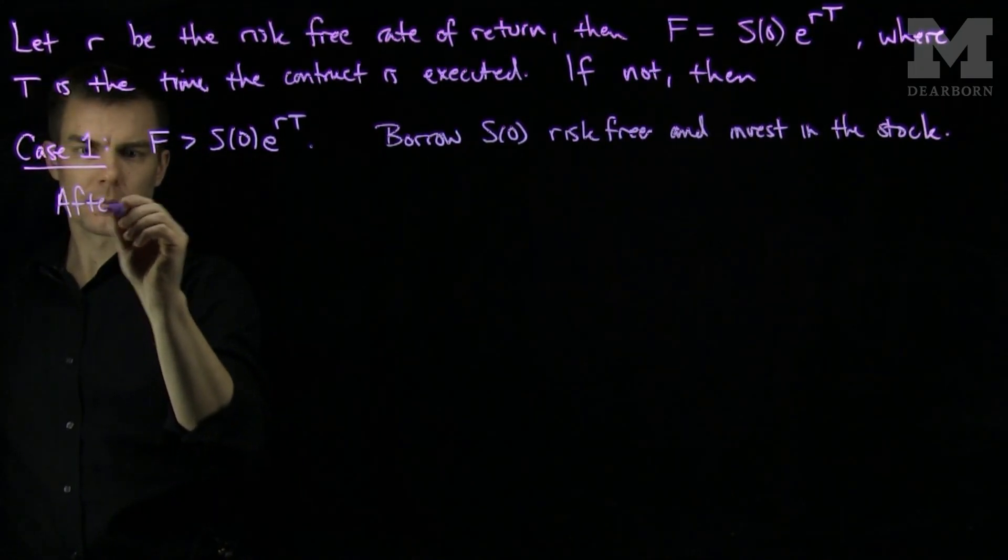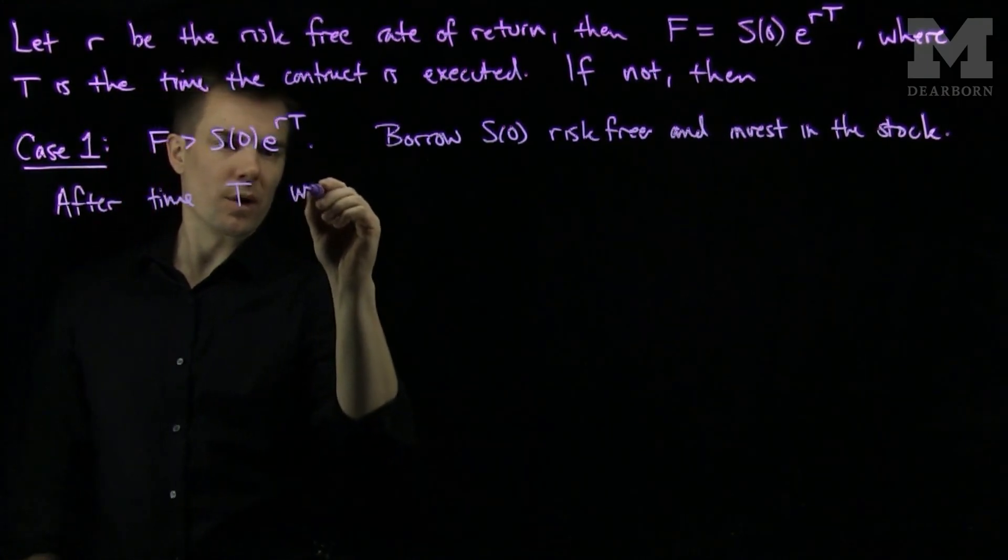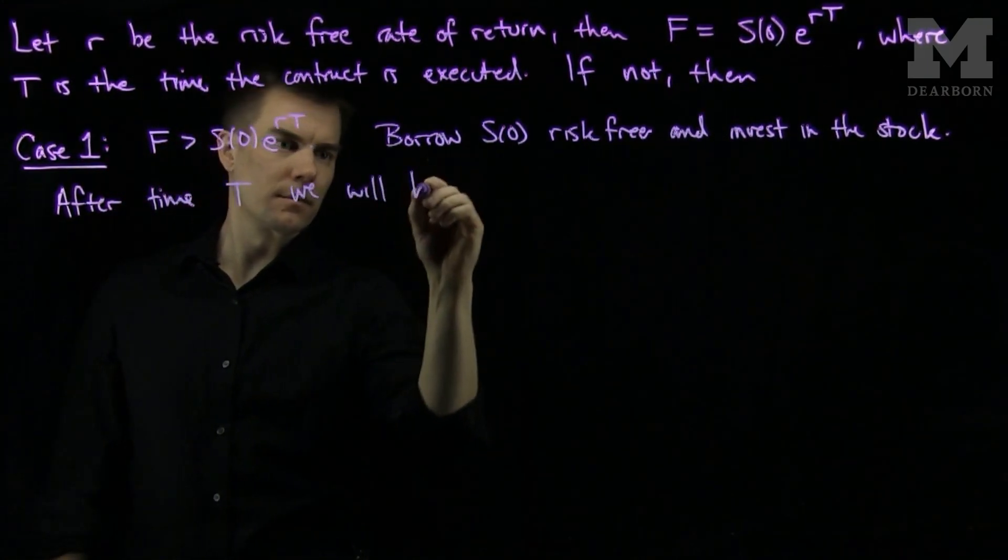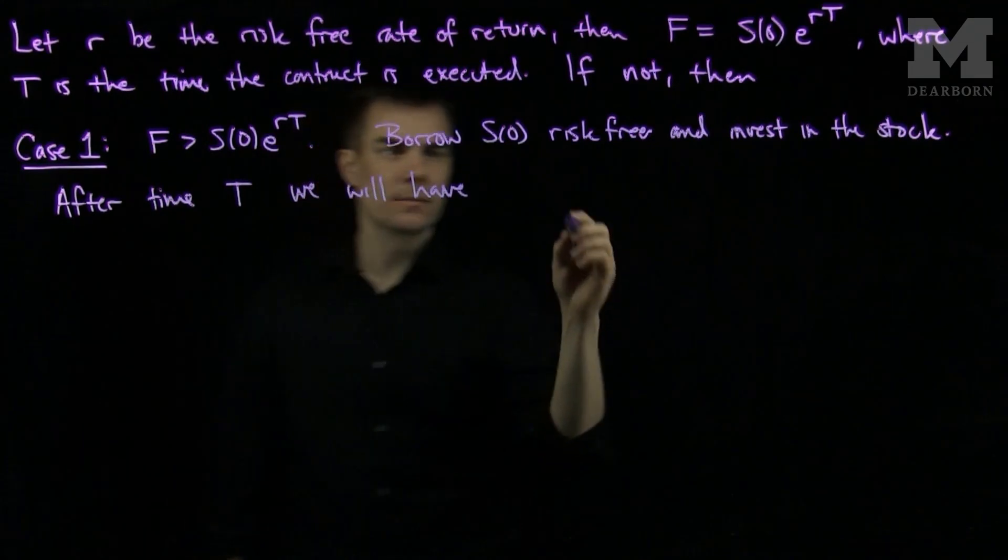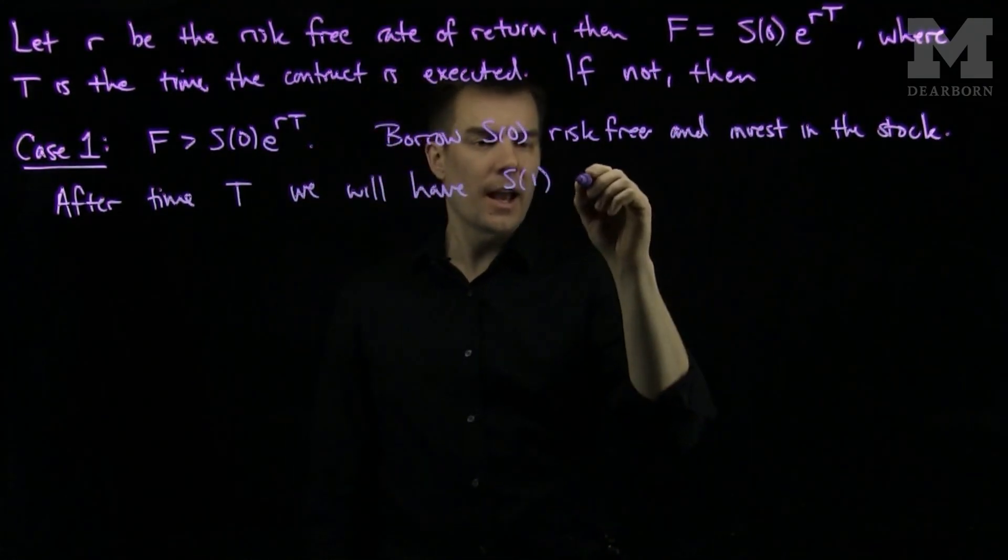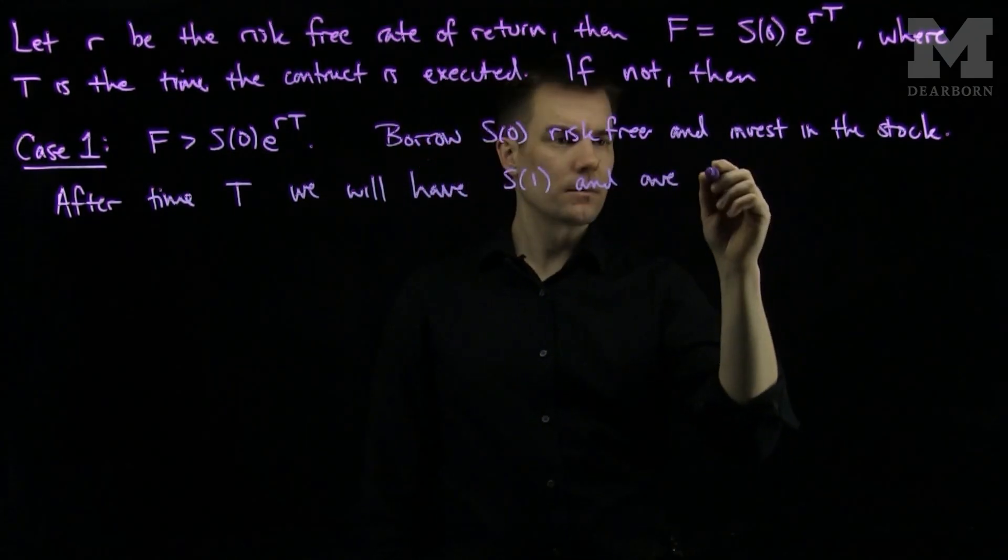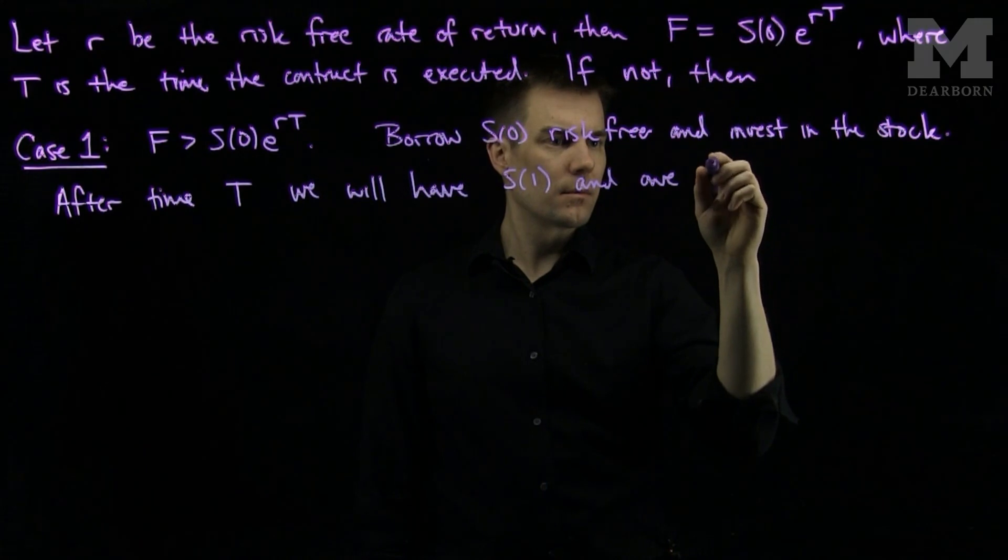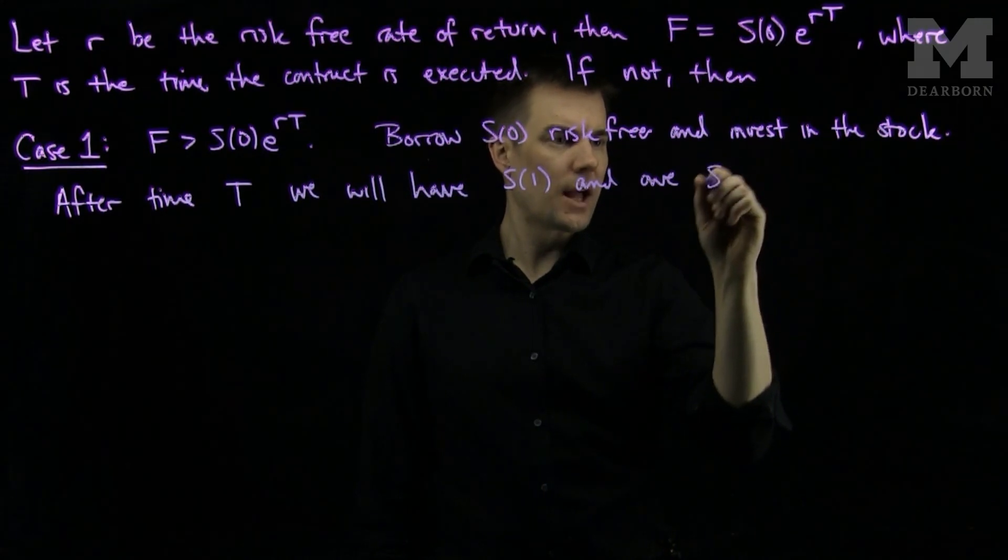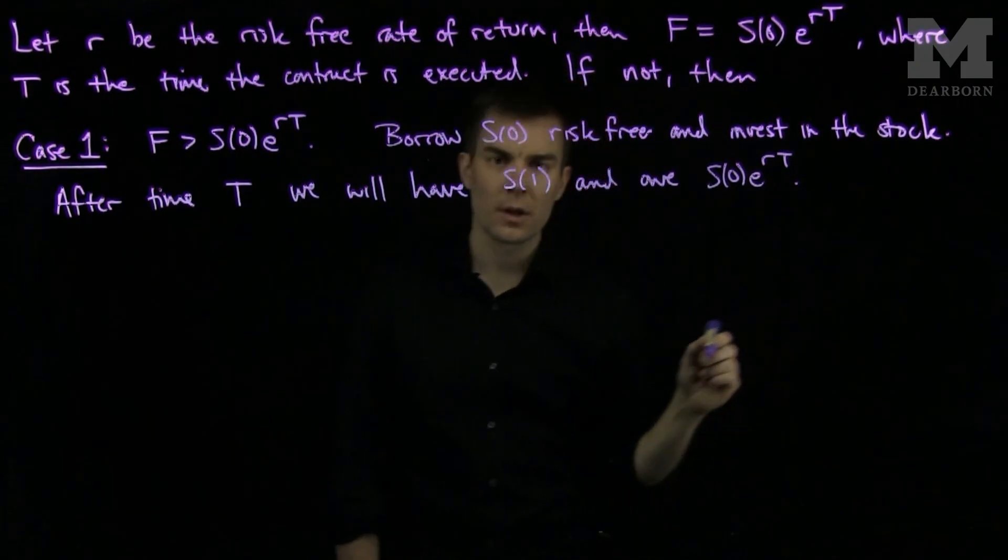we will have S1, the stock price at time 1, and owe S0 times e to the RT.